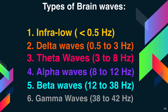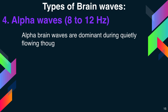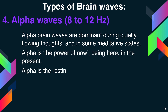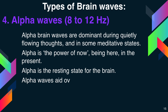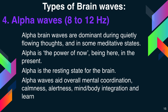The fourth type is alpha waves, between 8 to 12 hertz. Alpha brain waves are dominant during quietly flowing thoughts and in some meditative states. Alpha is the power of now — being here in the present. Alpha is the resting state for the brain. Alpha waves aid overall mental coordination, calmness, alertness, mind-body integration and learning.